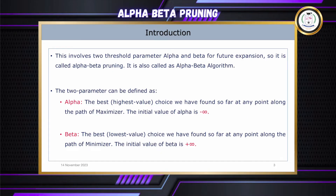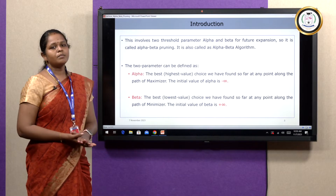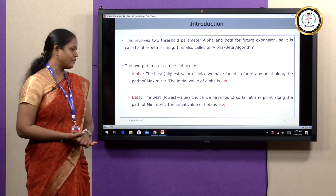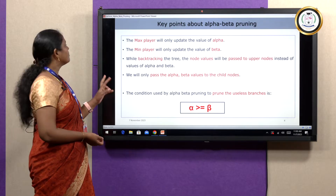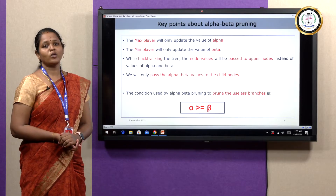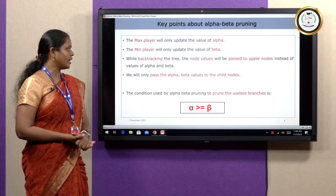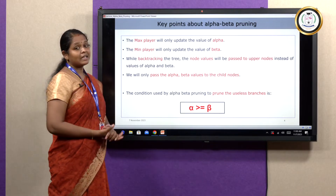Alpha is initialized as minus infinity. The next parameter is beta, which represents the best lowest value, and beta is initialized as plus infinity. Key points to remember: alpha is updated by the max player, and beta is updated only by the min player. The alpha-beta pruning algorithm follows the depth-first exploration method.